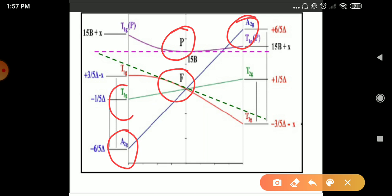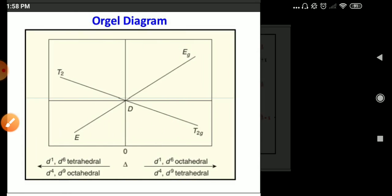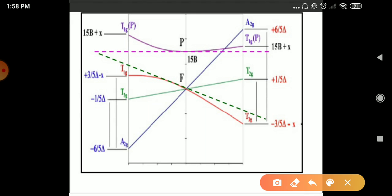T2g to T2g. This T2g for F term symbol and this T1g is 4F term symbol, this T1g is 4F term symbol and this T1g is 4P term symbol.